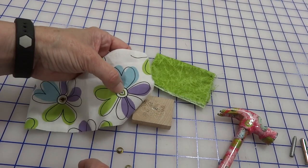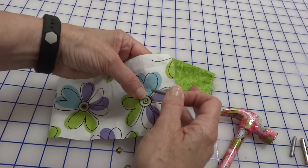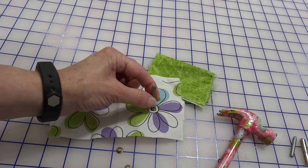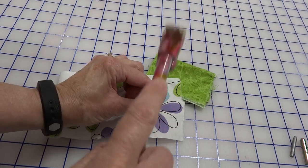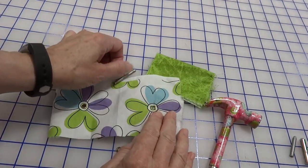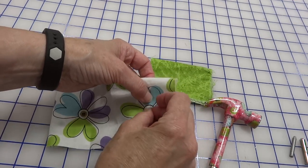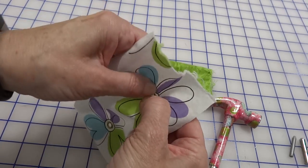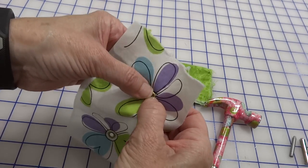You're going to find the spot that you're going to put your eyelet in, and you're going to take your tool that has the sharp sides. You're going to need a hammer, and you're going to hammer through the fabric so that you make a hole that's just the right size so that your little eyelet will insert into that hole.